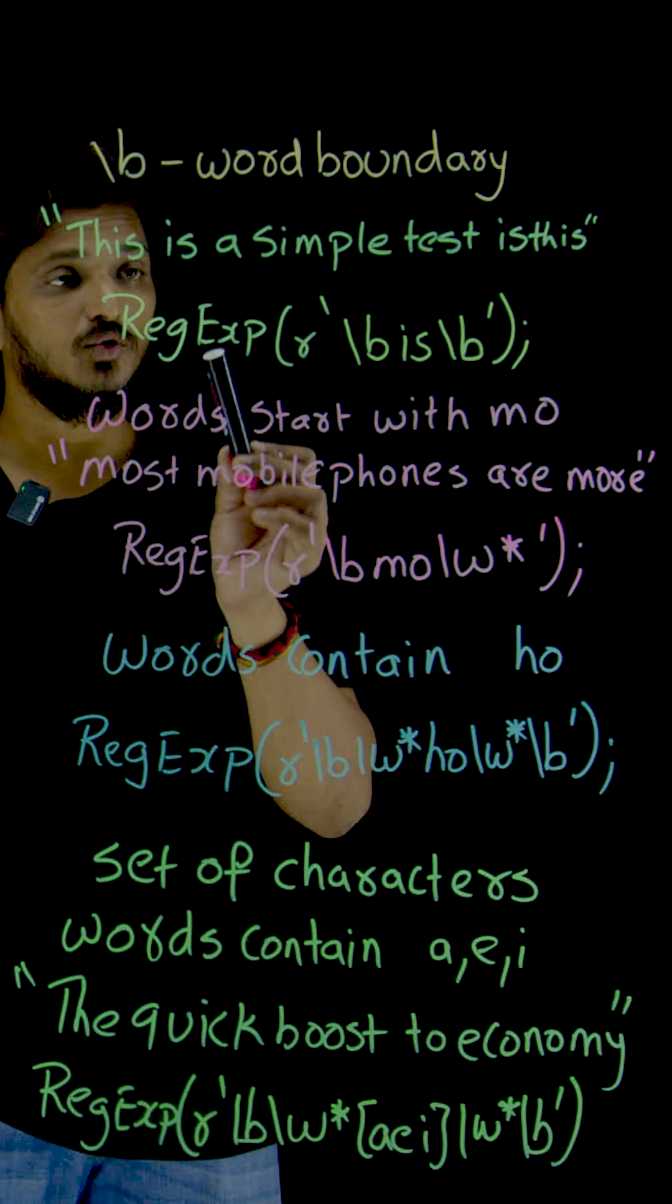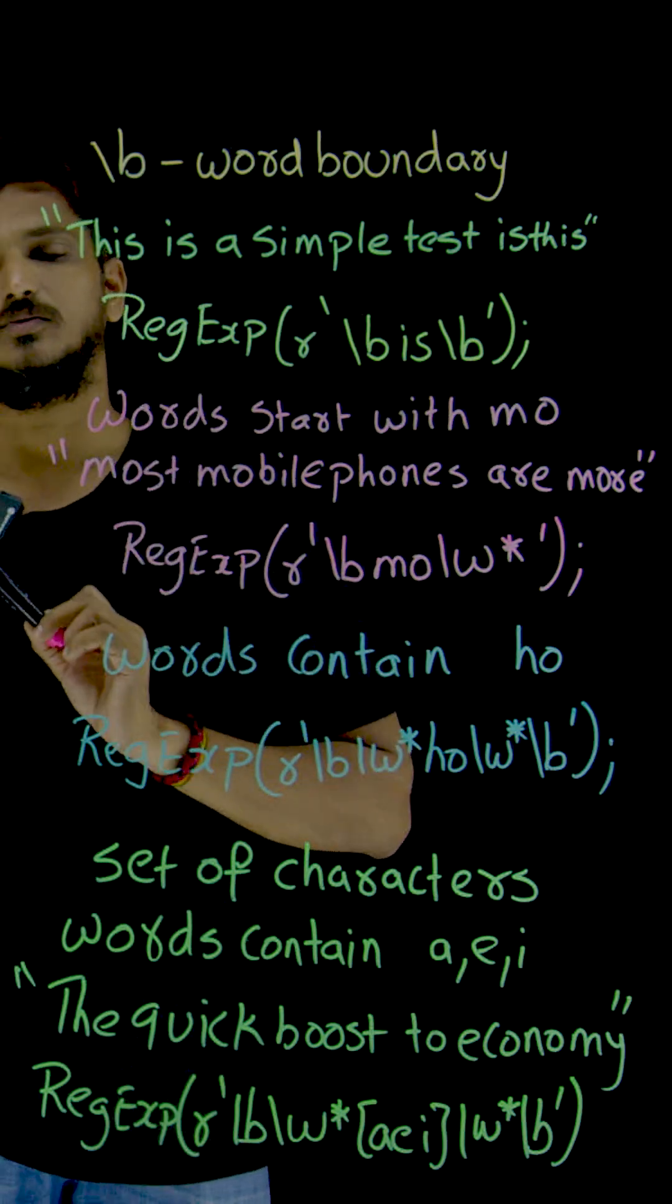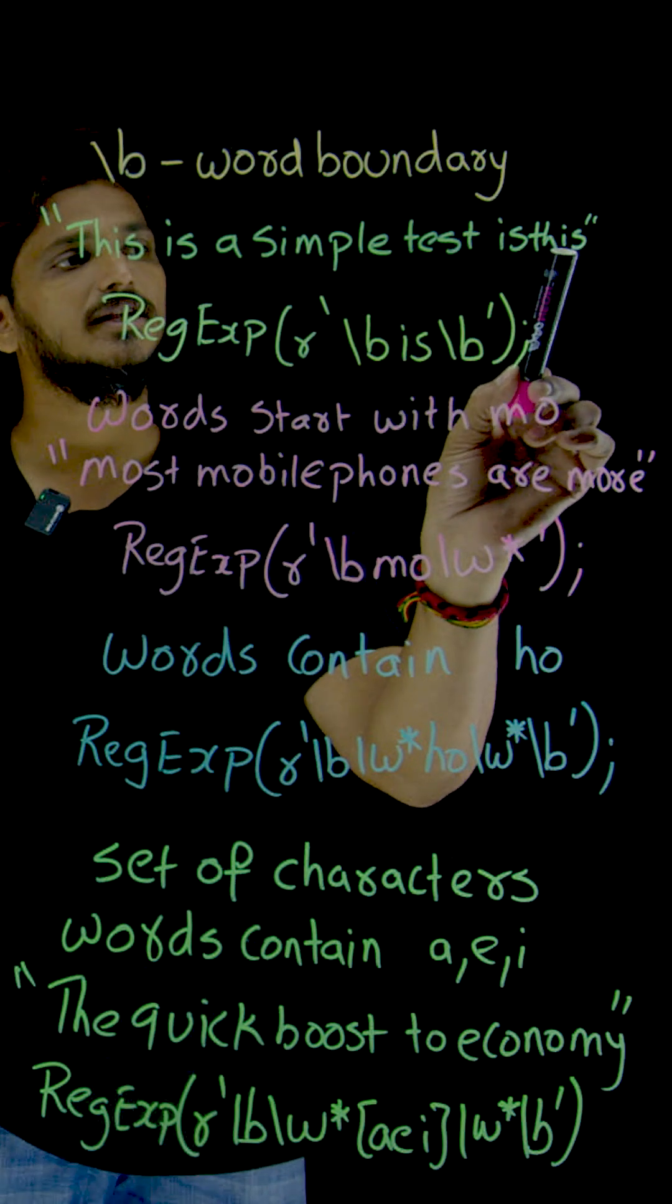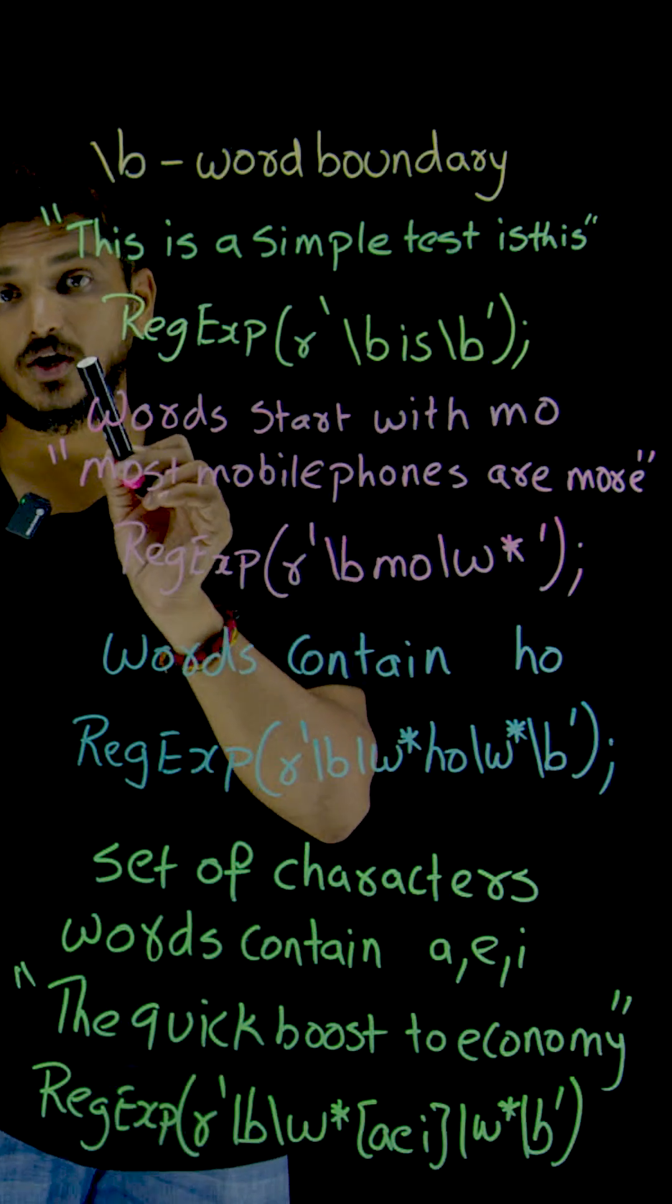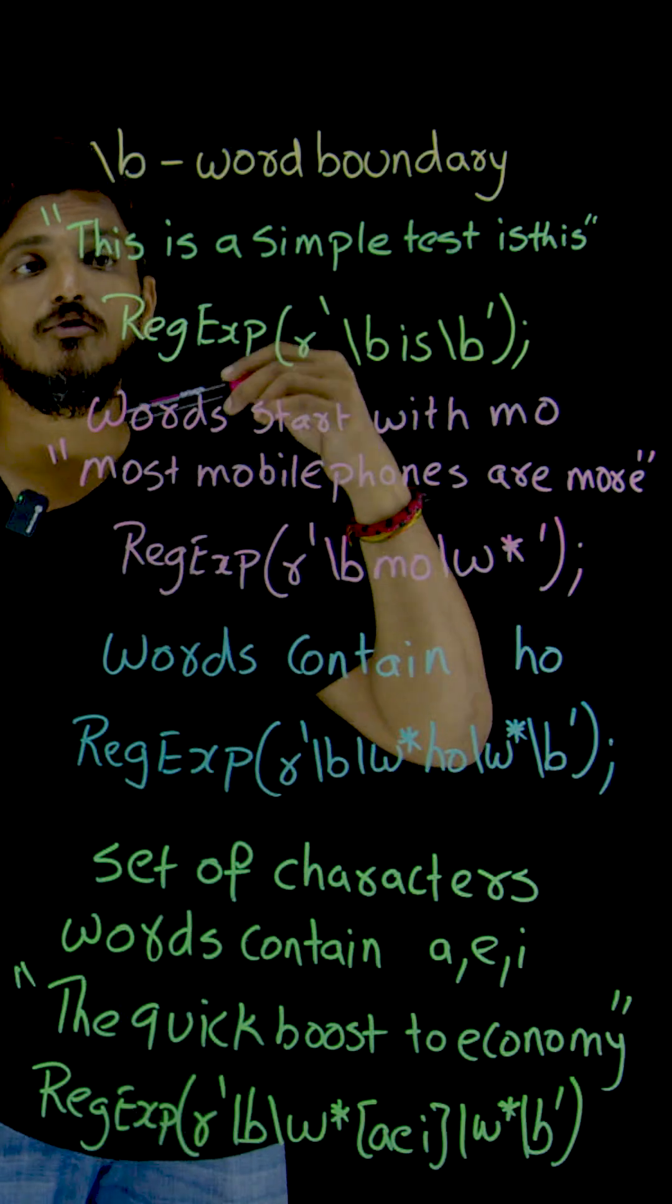We need to identify only 'is', but observe carefully. 'Is' is present in 'this' also. 'Is' is present here in the last 'this' also. You should not identify those.